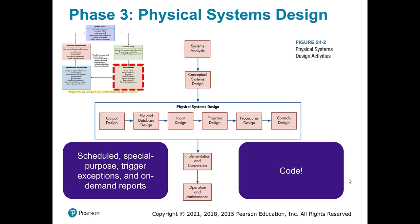Next, we have the physical design. One common approach is to start with the end first — starting with the output. For example, you might put together a monthly report showing what Starbucks store managers should see as a profit and loss. Once you have that output, you can go into file and database design to figure out what fields you need. Then you can go into input — what should be put into the system — and get into any changes in processing. And then, importantly, talk about controls: how will you ensure that things are happening properly?